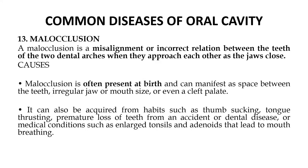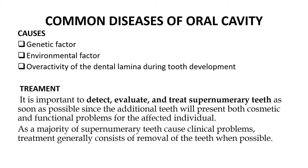A common disease associated with the oral cavity is malocclusion — a misalignment or incorrect relation between the teeth of the two dental arches when they approach each other as the jaws close. Common causes include conditions present at birth, such as space between the teeth, irregular jaw or mouth size, or a cleft palate. It can also be acquired from habits such as thumb sucking, tongue thrusting, premature loss of teeth, or medical conditions such as enlarged tonsils and adenoids. General causes include genetic factors, environmental factors, or overactivity of the dental lamina during tooth development. Treatment involves detecting, evaluating and removing supernumerary teeth, or other advanced cosmetic treatments.